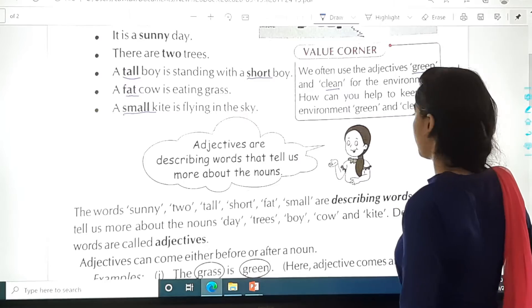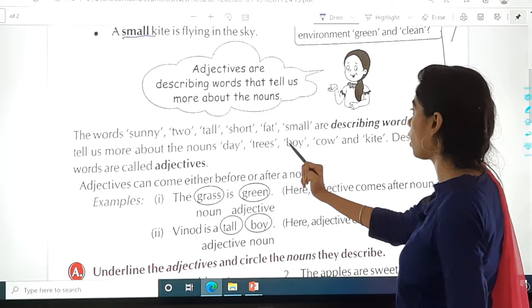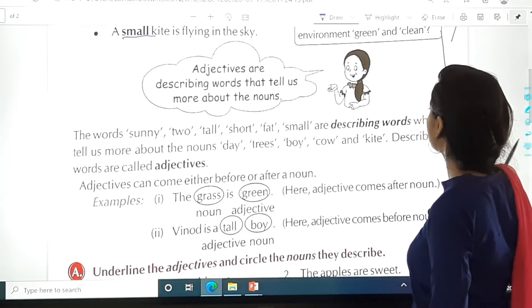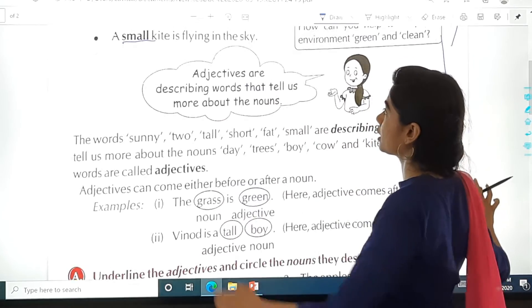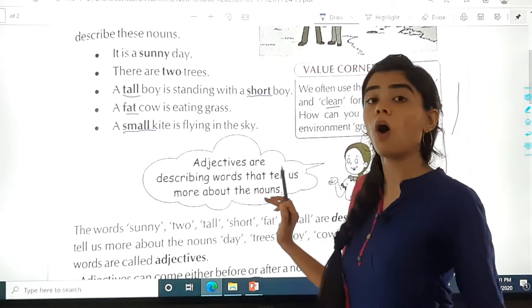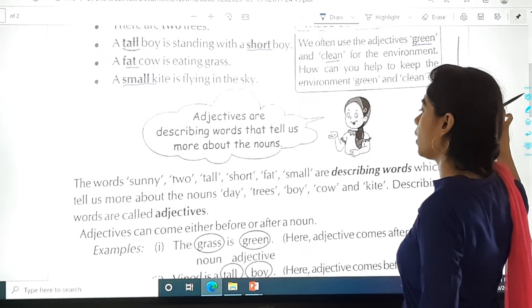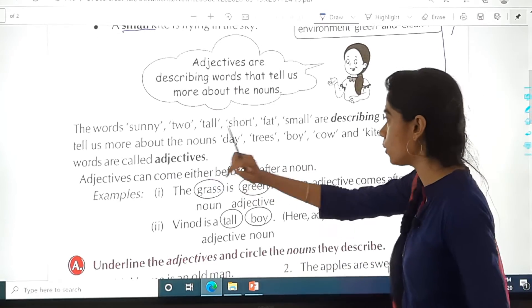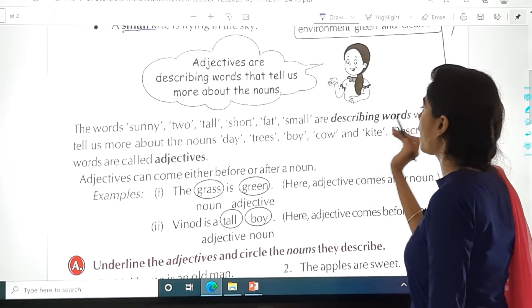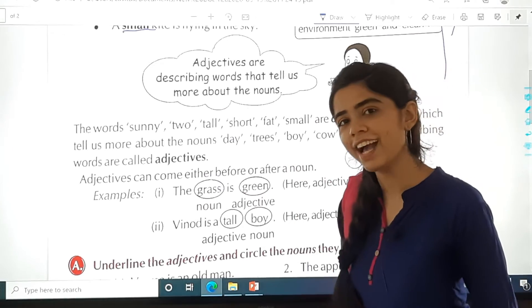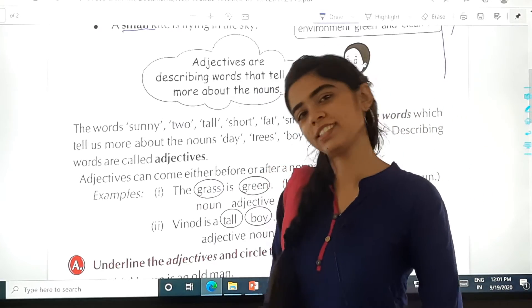Now the words sunny, two, tall, short, fat, small are describing words. All these are describing words which tell us more about the nouns that are day, trees, boy, cow and kite. Such words are called adjectives.